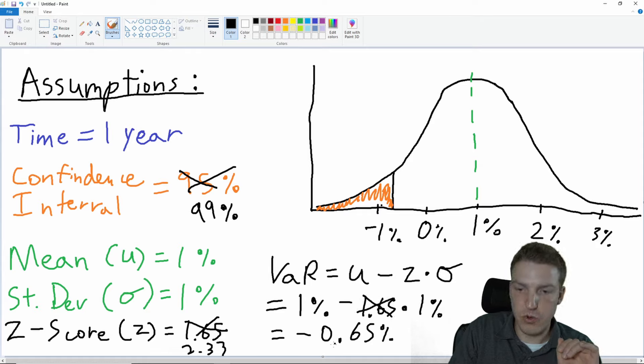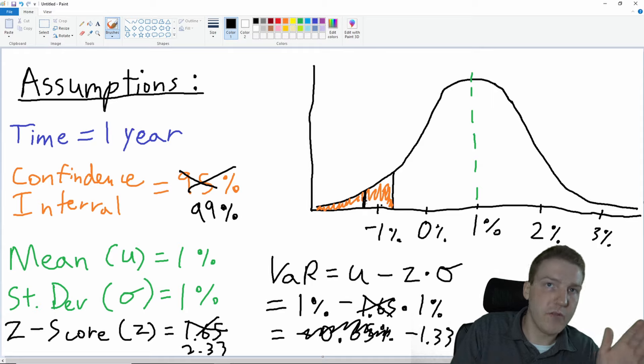Then it ends up being 1% minus 2.33%, which gives us -1.33%. At a 99% confidence interval, our tail loss might be here. So we're going further into the tail when our confidence interval increases.